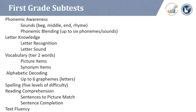First grade receives more subtests in their IRI assessment than other grade levels. Phonemic awareness for first grade measures sound discrimination and blending, beginning with three sounds and working up to six sounds. First grade students should quickly progress through this subtest, seeing it drop out of their battery by mid to end of the year. Letter knowledge is assessed in first grade as a fluency measure for recognition and sound, allowing five seconds per question, and will drop out of the testing battery as students reach mastery.